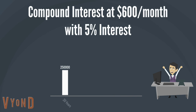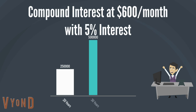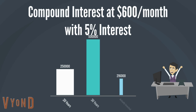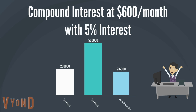Compound interest is very powerful the earlier you start to save or invest. For example, say you started to save or invest $600 a month earning 5% interest. That would mean you would have to set aside $7,200 a year. After 20 years, you would have $250,000, and after 30 years, you would have $500,000, even though all you saved or invested was $216,000.